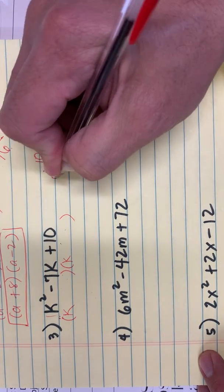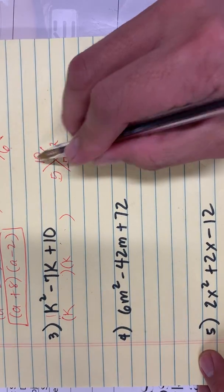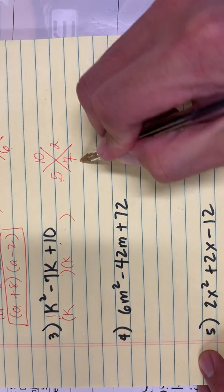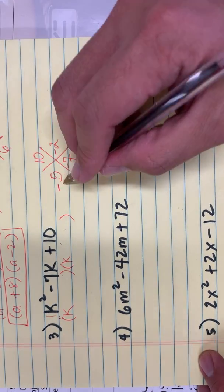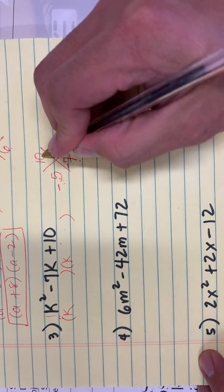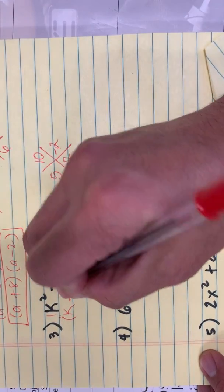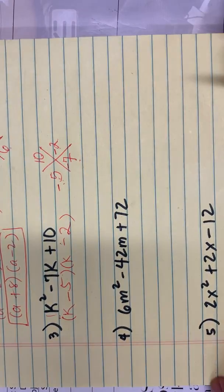So I can think it's 5 and 2. But 5 times 2 is 10, that's right, but 5 plus 2 is not negative 7. But negative 5 minus 2 will give me negative 7, and negative 5 times negative 2 will still give me positive 10. So the answer is negative 5 here and negative 2.